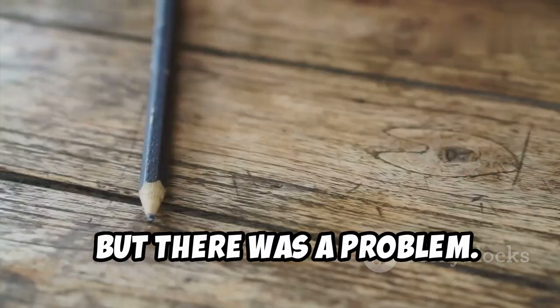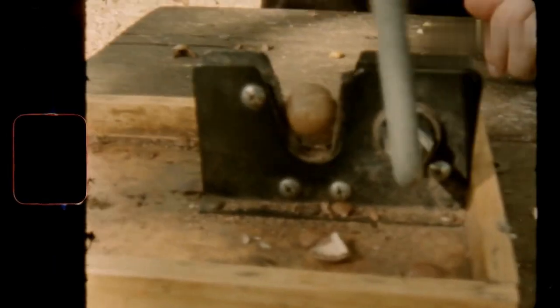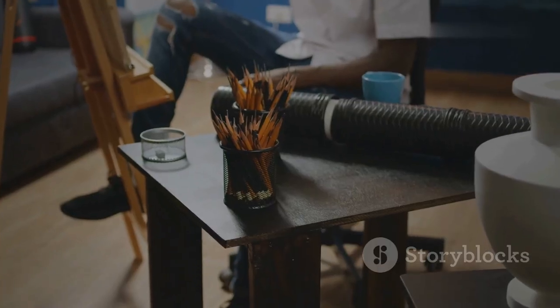But there was a problem. The eraser would often come loose or fall off. Enter the ferrule. This small piece of metal, usually aluminum, acts as a clamp. It secures the eraser to the pencil, ensuring it stays in place.